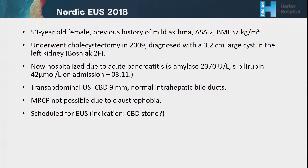Our next case is a 53-year-old female with a previous history of mild asthma but otherwise healthy. She underwent a cholecystectomy in 2009 and was also diagnosed with a 3.2 centimeter large cyst in the left kidney. She is now hospitalized due to acute pancreatitis and a slightly elevated bilirubin. The abdominal ultrasound showed a CBD of 9 millimeters and normal intrahepatic bile ducts. MRI could not be performed due to claustrophobia and the patient is now referred for an EUS.